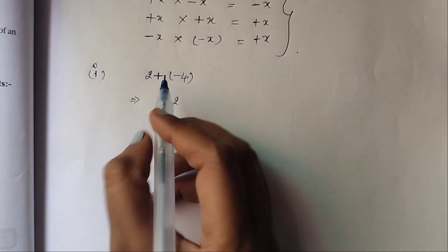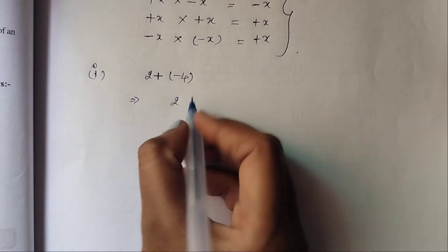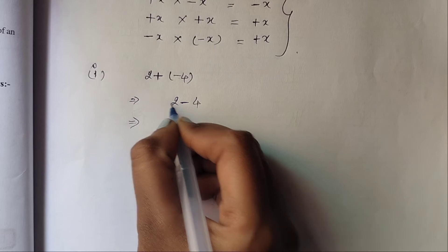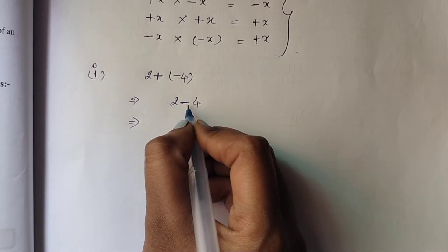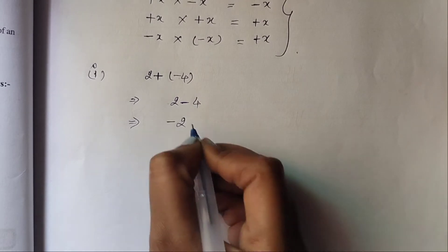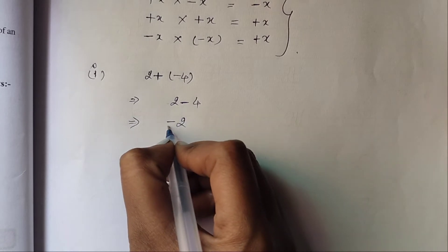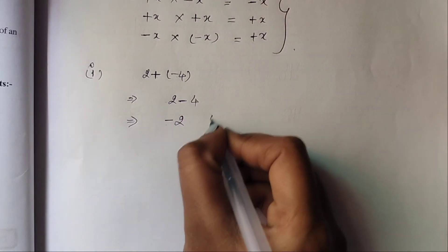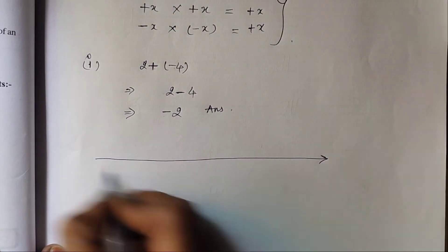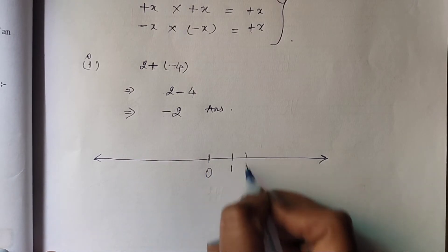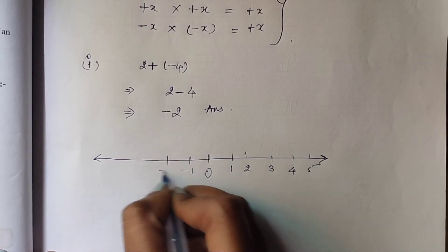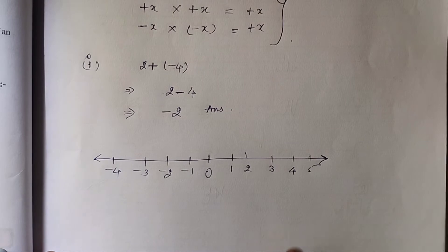So: 2 plus minus 4 means 2 minus 4. Minus 4 plus 2 gives minus 2, because the bigger digit has a minus sign so the answer also has minus. Now let's represent this on the number line: 1, 2, 3, 4, 5 on the positive side and minus 1, minus 2, minus 3, minus 4 on the negative side.